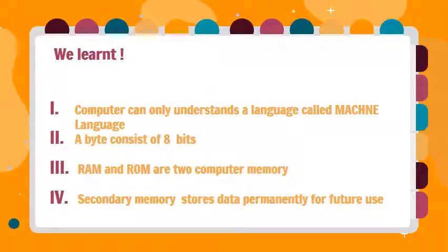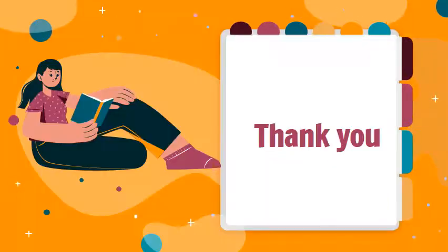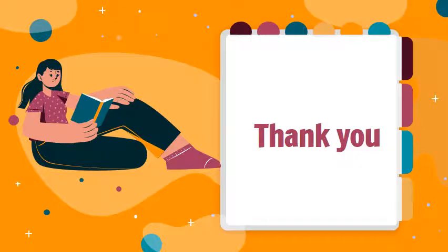We learned that computers can only understand a language called machine language. A byte consists of 8 bits. RAM and ROM are two types of computer memory. Secondary memory stores data permanently for future use. Thank you, class 5. I will be back with a new topic very soon. Till then, complete your work and do the exercise pages of this chapter. The PDF is attached to it.